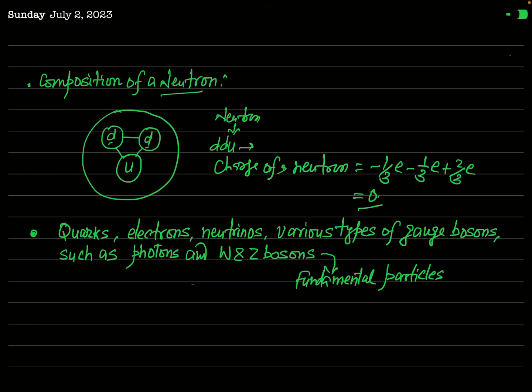But if you talk about quarks, do they have any internal structure? The answer is no. If you talk about electrons, do they have any internal structure? The answer is no. Similarly, neutrinos and various types of gauge bosons like photons, W and Z bosons — these particles have no internal structure and are not composed of quarks.